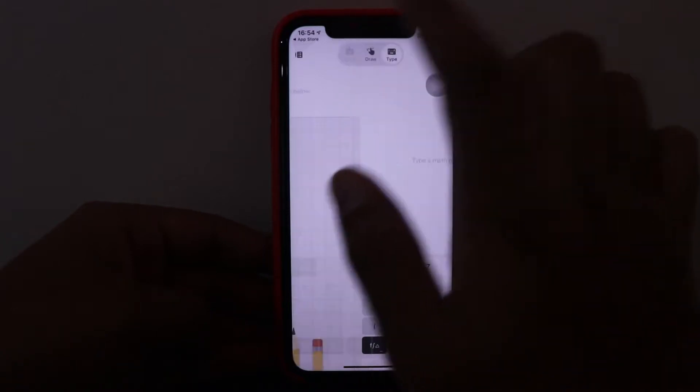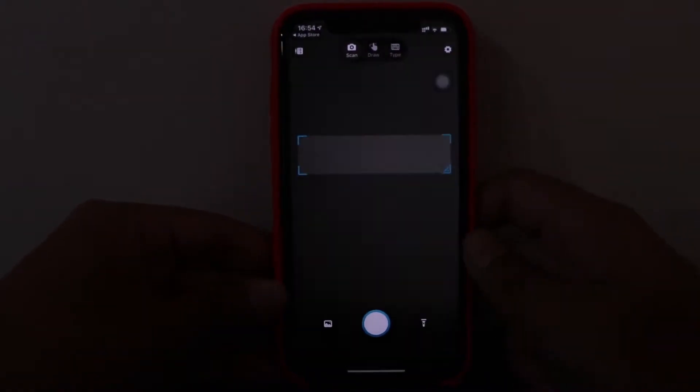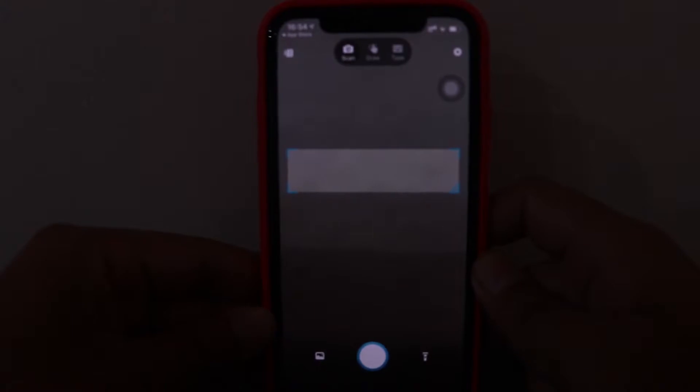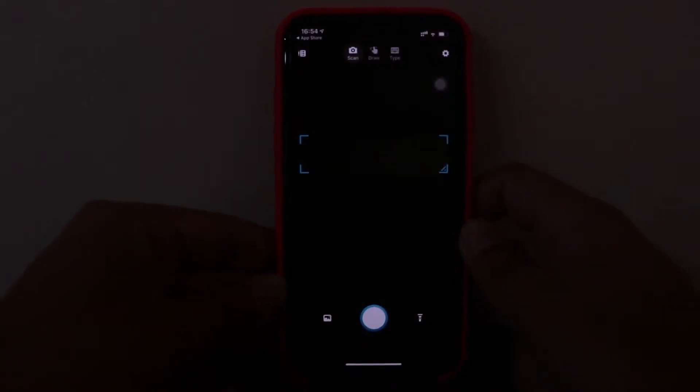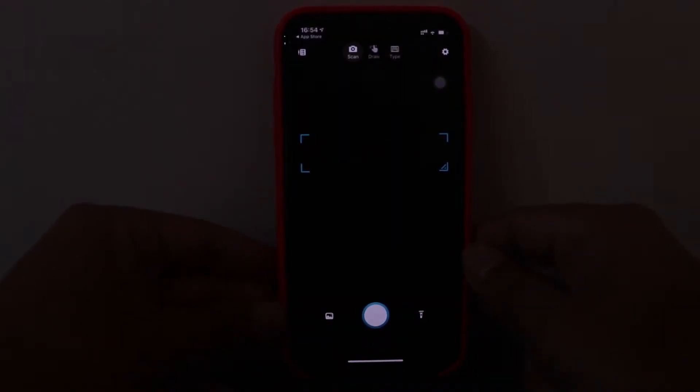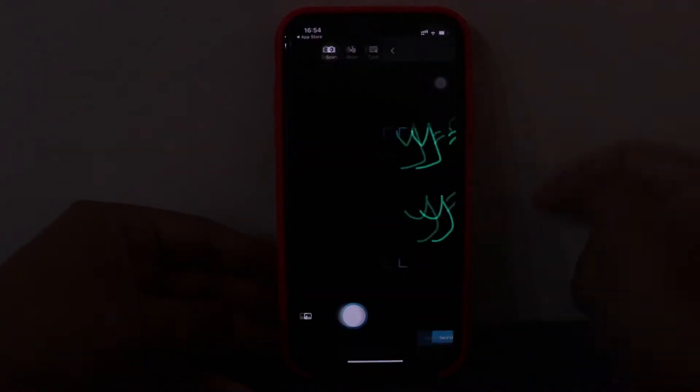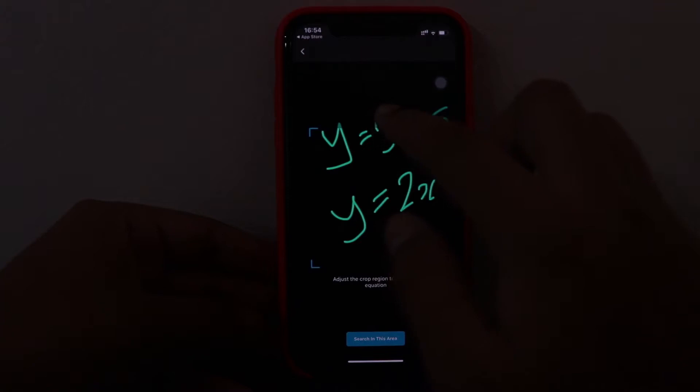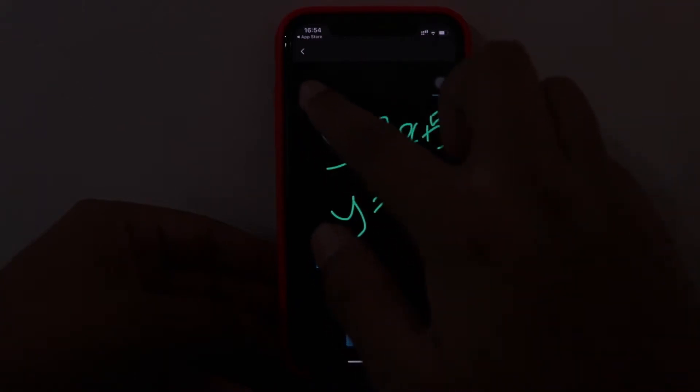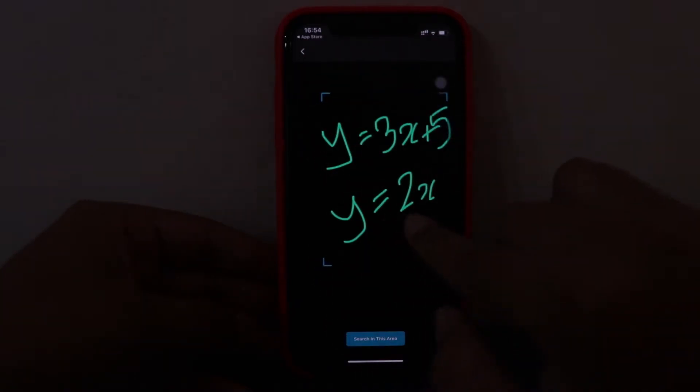Let's start with scan. So basically it opens your camera so you can scan the equation from camera as well, or you can just select it from your images. So let's just go to images and I have this equation over here. So I just need to select the area where the equation is covered.